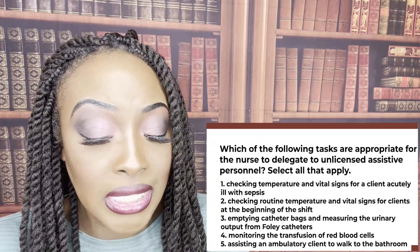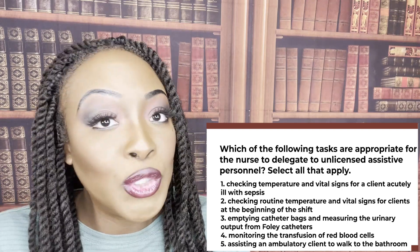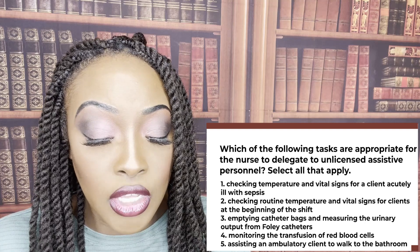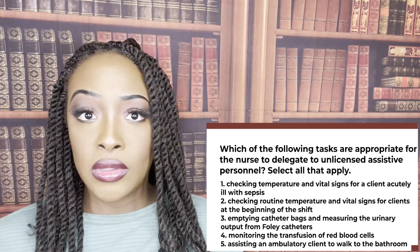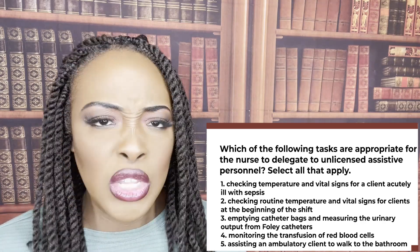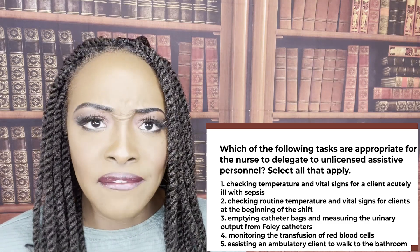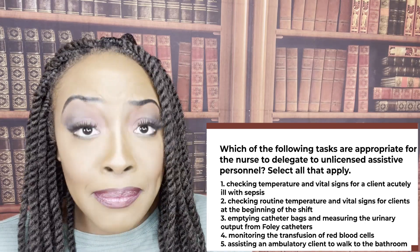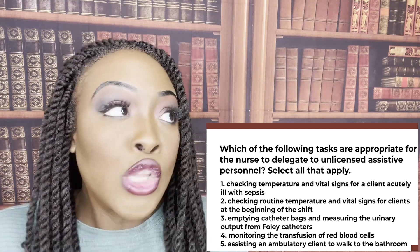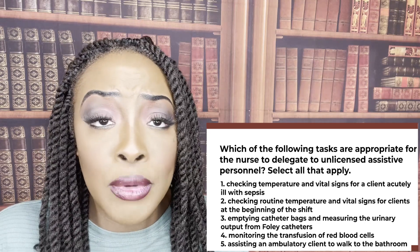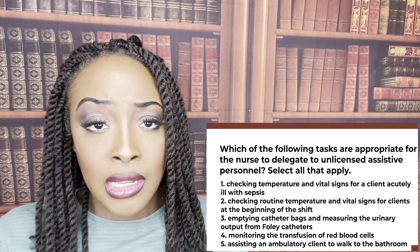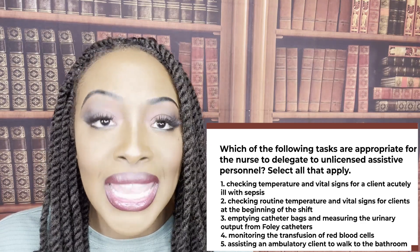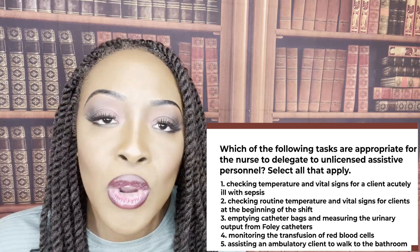Which of the following tasks are appropriate for the nurse to delegate to an unlicensed assistive personnel (UAP)? Treat select all that apply as true or false. One, checking temperature and vital signs for a client acutely ill with sepsis — false. Although UAPs can do vital signs, the keyword is 'acutely ill.' The patient is unstable, so the nurse must go in and perform the assessment. Even if something is within UAP scope, an unstable patient cannot be delegated to a UAP. This is where critical thinking comes in for NCLEX, ATI, and HESI.